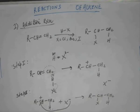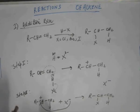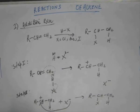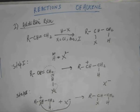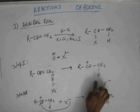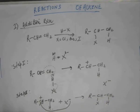This is how the addition takes place in two steps. The crux of the mechanism: in step one, HX comes and H is added such that the carbocation formed is more stable. Generally, due to the hyperconjugating effect, the carbocation is more stable on a 2° or 3° carbon, so hydrogen attaches preferably to the 1° carbon. In step two, X− attacks the carbon carrying the positive charge and gets attached to it.